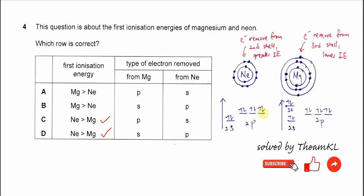So in order to remove the electron from neon, the first electron, the electron must come from the 2p. Because 2p is a higher energy level than 2s, so the electron must be removed from this 2p for neon.